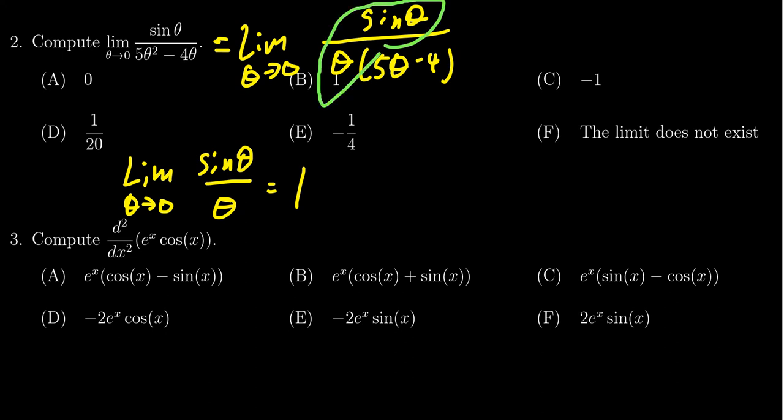That means that's going to turn out to be a 1. So we get the limit of sine theta over theta, take the limit as theta goes to 0, and we're multiplying that by the limit as theta goes to 0 of 1 over 5 theta minus 4.